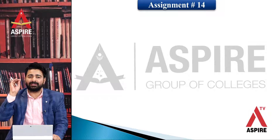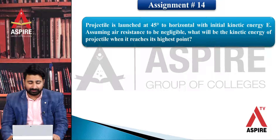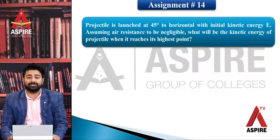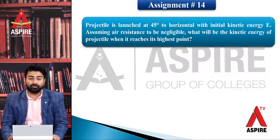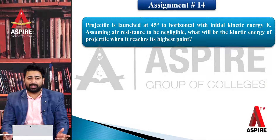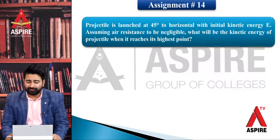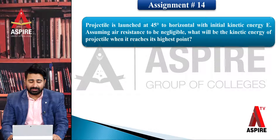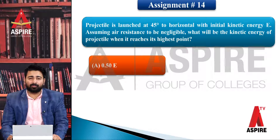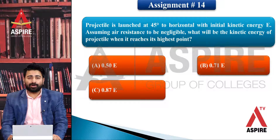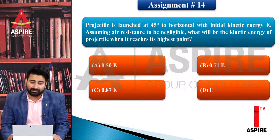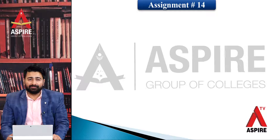On assignment number 14, the question is: a projectile is launched at 45 degrees to horizontal with initial kinetic energy E. Assuming air resistance to be negligible, what will be the kinetic energy of the projectile when it reaches its highest point? The options are: 0.5E, 0.71E, 0.87E, or E.